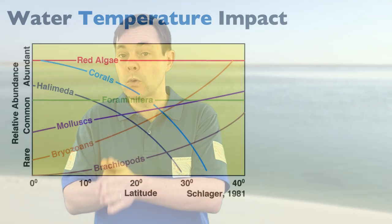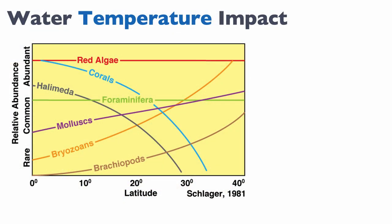It's not that molluscs, bryozoans, and brachiopods produce more in cold water — it's that halimeda and corals produce less. Keep in mind the vertical axis is relative abundance. Molluscs, bryozoans, and brachiopods are much less abundant producers than corals and halimeda. So if you stop autotroph production, the relative proportion of non-autotrophs increases, but the total volume of carbonate sediments away from the equator decreases. We have more carbonate production in tropical seas and less as we move into colder, higher-latitude waters. Notably, red algae and foraminifera tend to be fairly consistent across all these environments, not varying much with latitude.